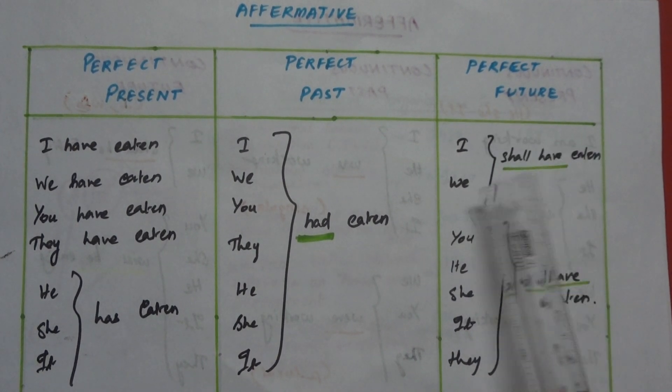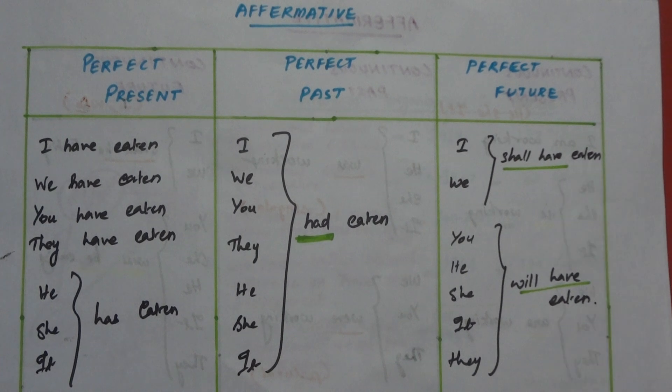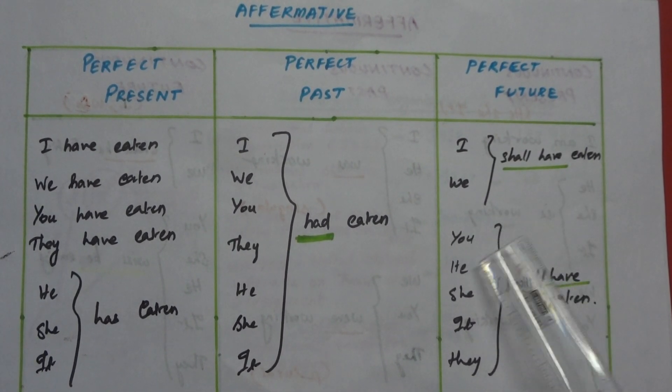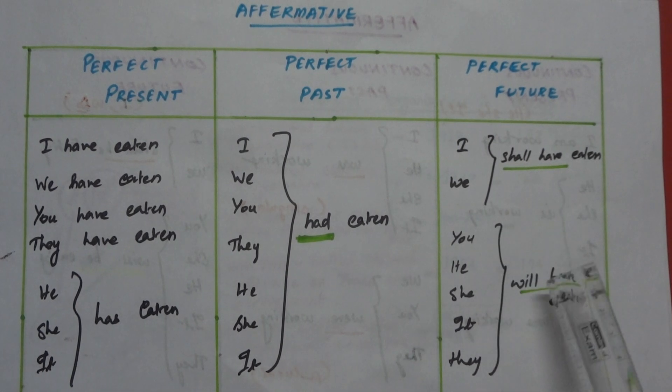We will have eaten. So, shall have eaten. I shall have eaten, we shall have eaten. Then we will talk about he, she, they will have eaten.